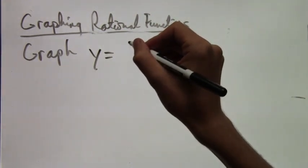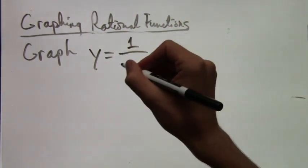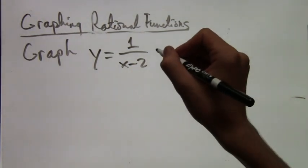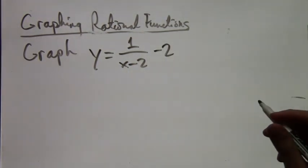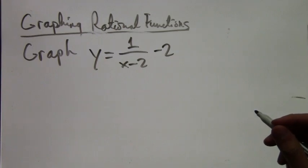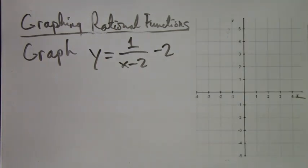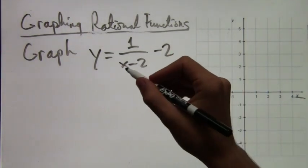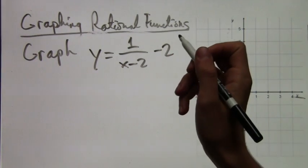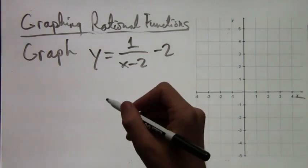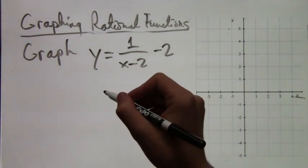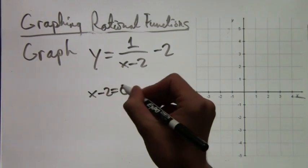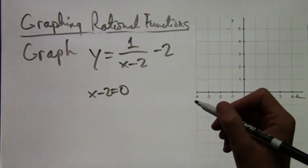So let's take y equals 1 over x minus 2 minus 2. Alright, so here's our blank coordinate plane. Now first we're going to look at just the 1 over x minus 2 part. Dividing by 0 is not allowed. So we want to know where x minus 2 equals 0. This is pretty simply just x equals 2.